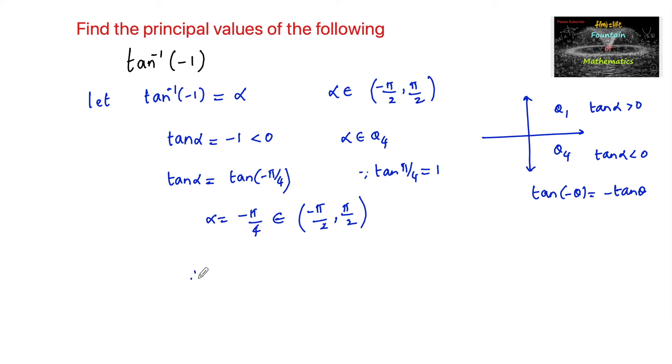Therefore, tan inverse of negative 1 is equal to negative pi by 4, which is the principal value.